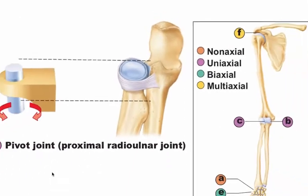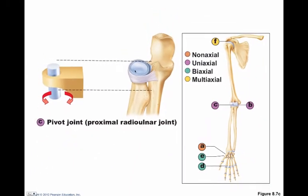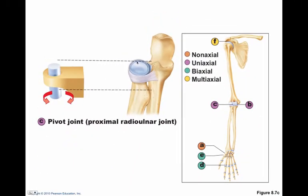The illustration shows the radial head of the radius interacting with the radial notch of the ulna. That relationship, in conjunction with the capitulum, is the pivot joint that we're interested in.